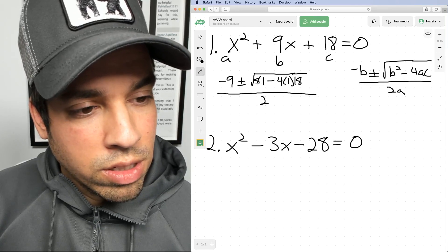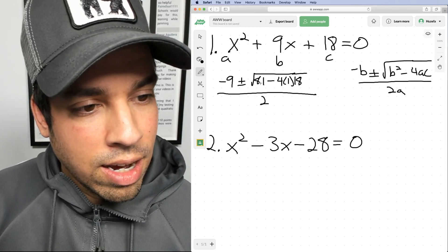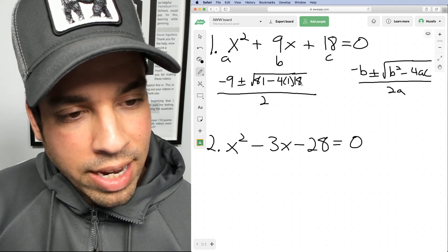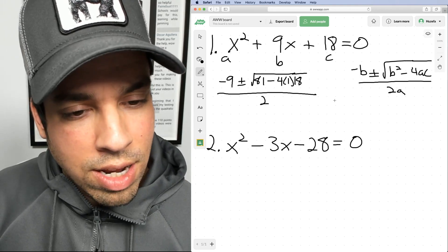All right, now let's evaluate what's inside. So we've got 81 and then four times 18 is 72, so 81 minus 72 is nine.